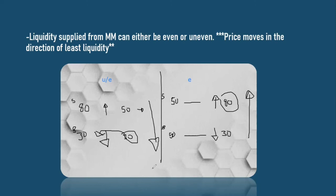Do you see why price is determined by the available liquidity and not necessarily one trader versus another? If the amount of orders exceed the available liquidity, the price is going to move in the direction of that liquidity. In the next coming videos we're going to see how you can actually check where the liquidity is and where the market orders are.